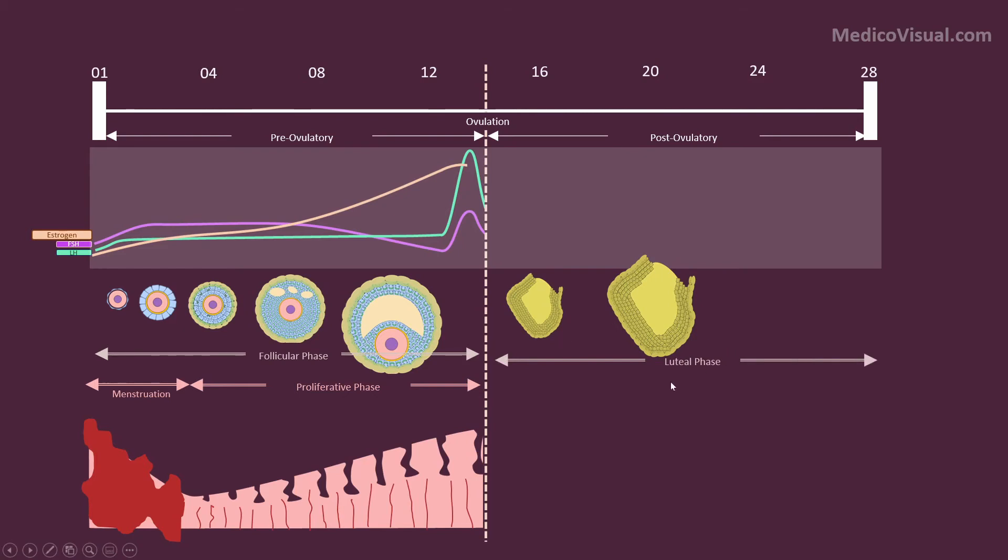As the corpus luteum is produced, we call it the luteal phase of the ovarian cycle. The function of this corpus luteum is to produce large amounts of progesterone.